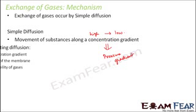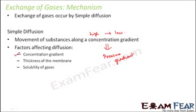The factors that affect the rate of diffusion are: first, the concentration gradient — the difference in pressures between two regions. Second, the thickness of the membrane — diffusion across the alveolar membrane is affected by how thick it is. A thicker membrane gives a lower rate of diffusion, while a thinner membrane allows easier passage and a higher rate. Third, the solubility of gases like oxygen and carbon dioxide also plays an important role.